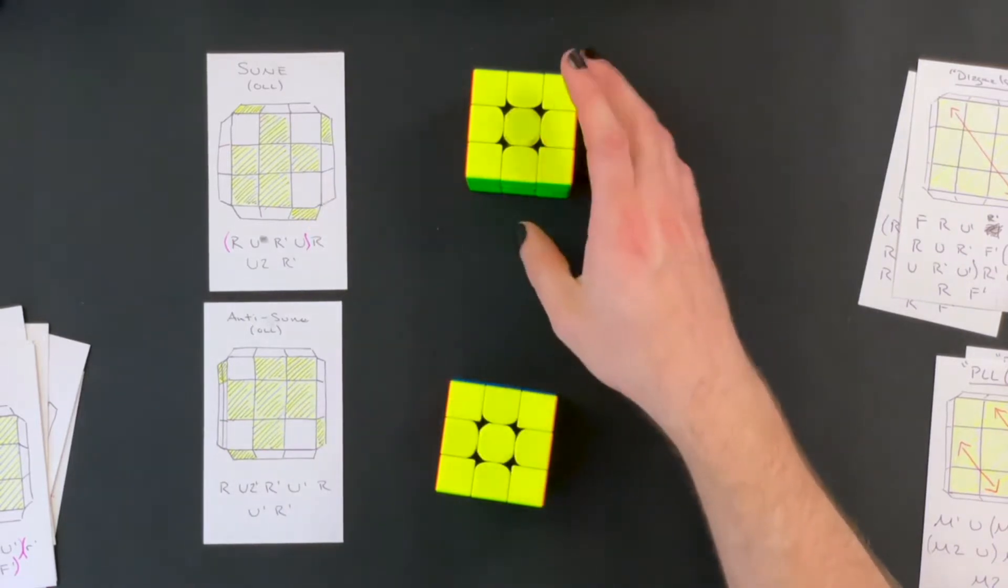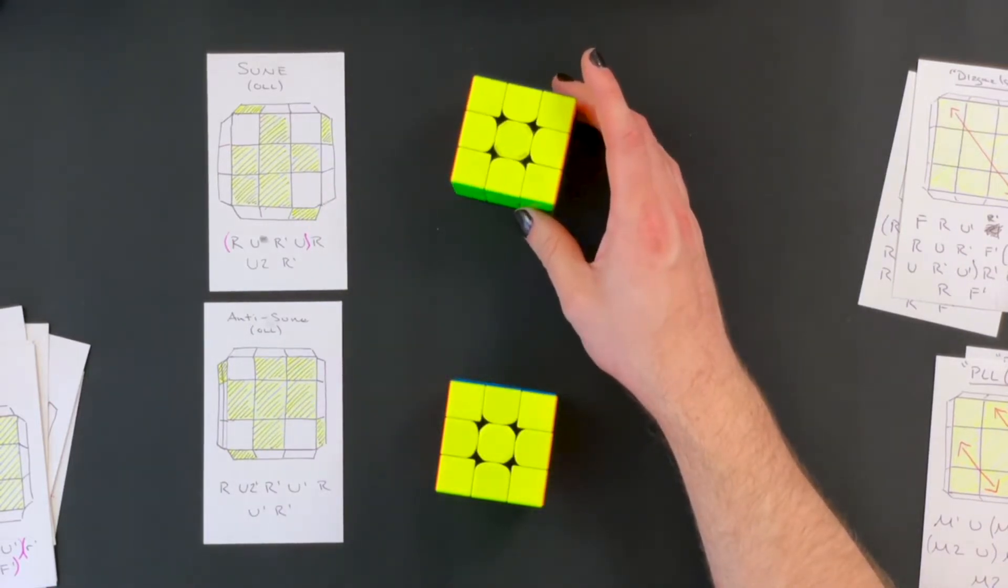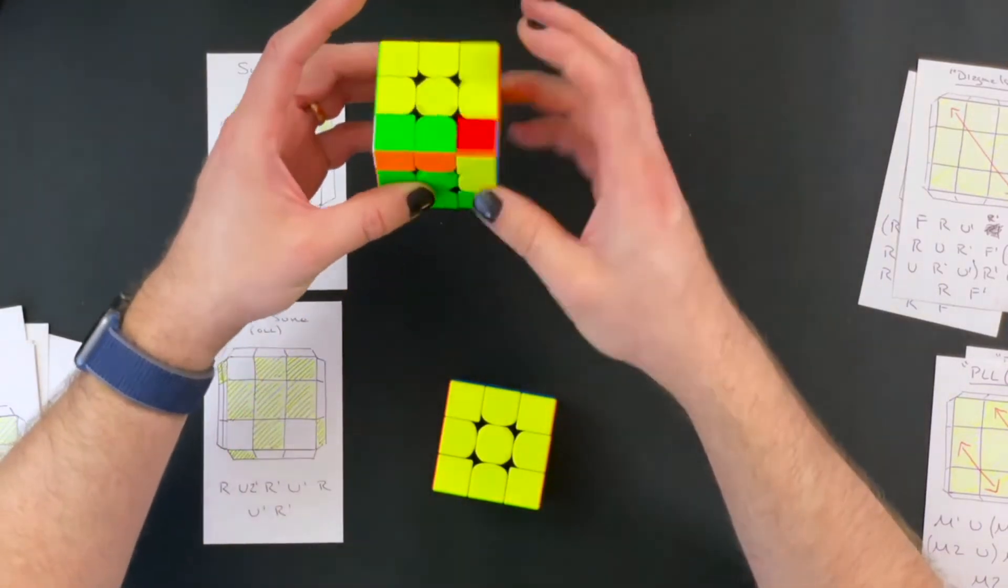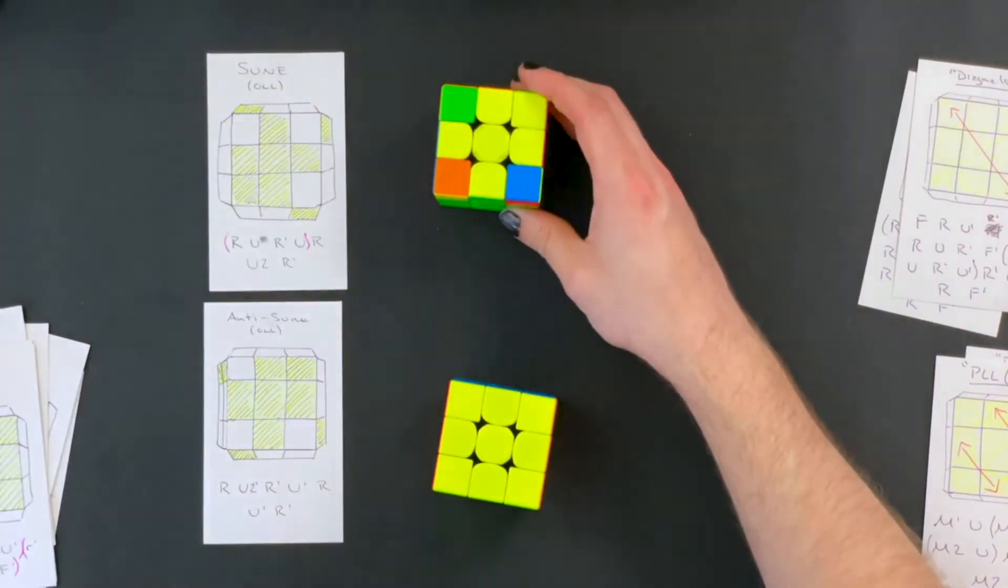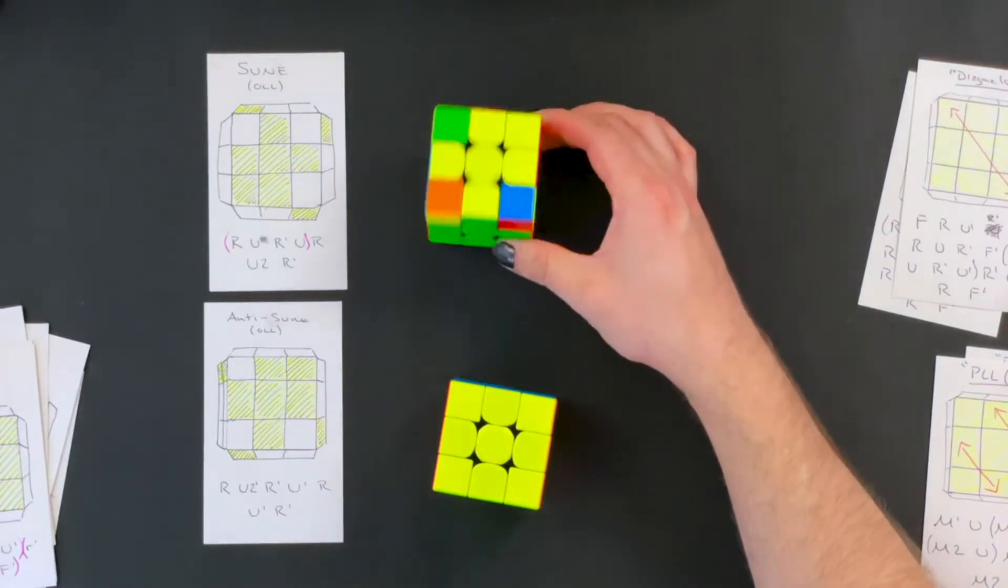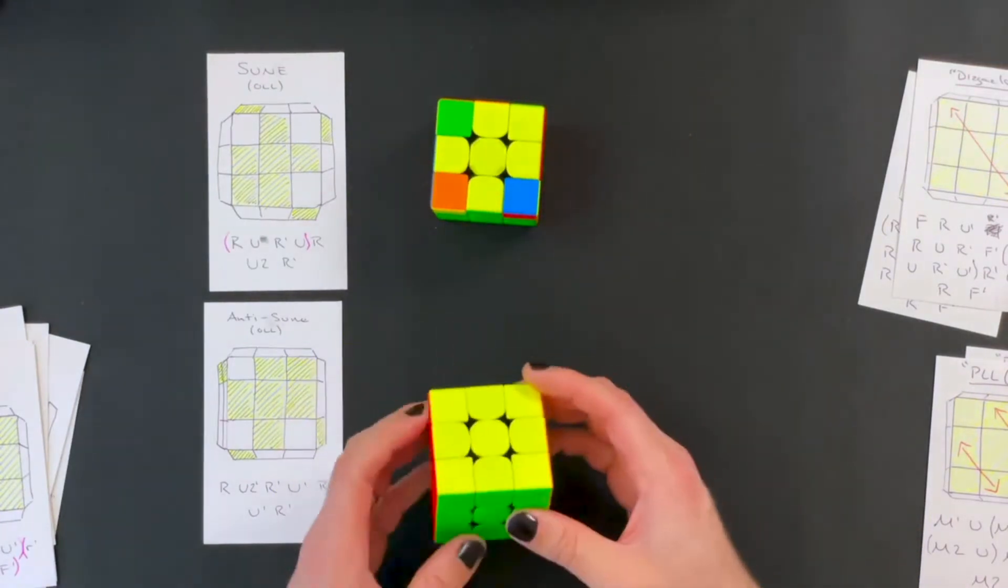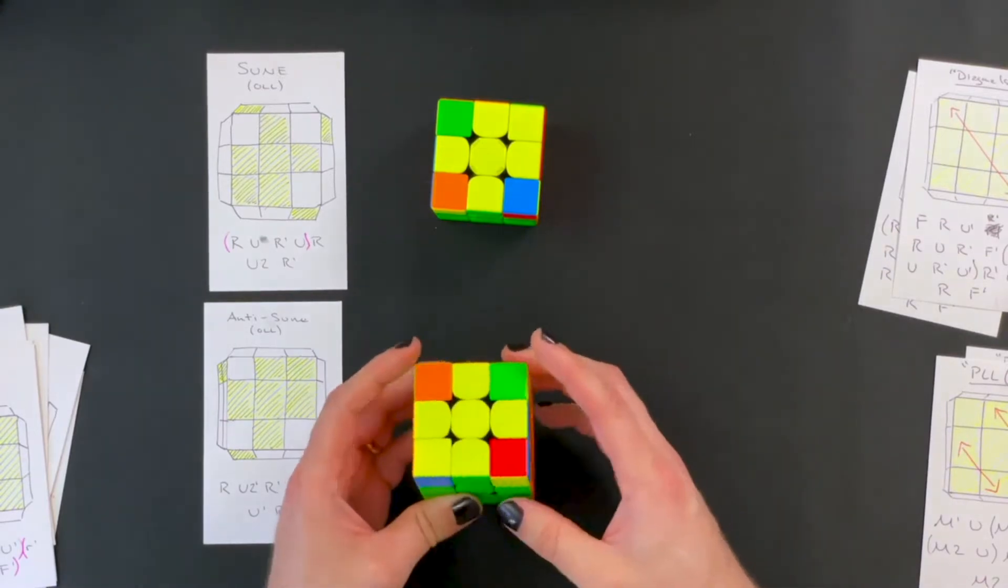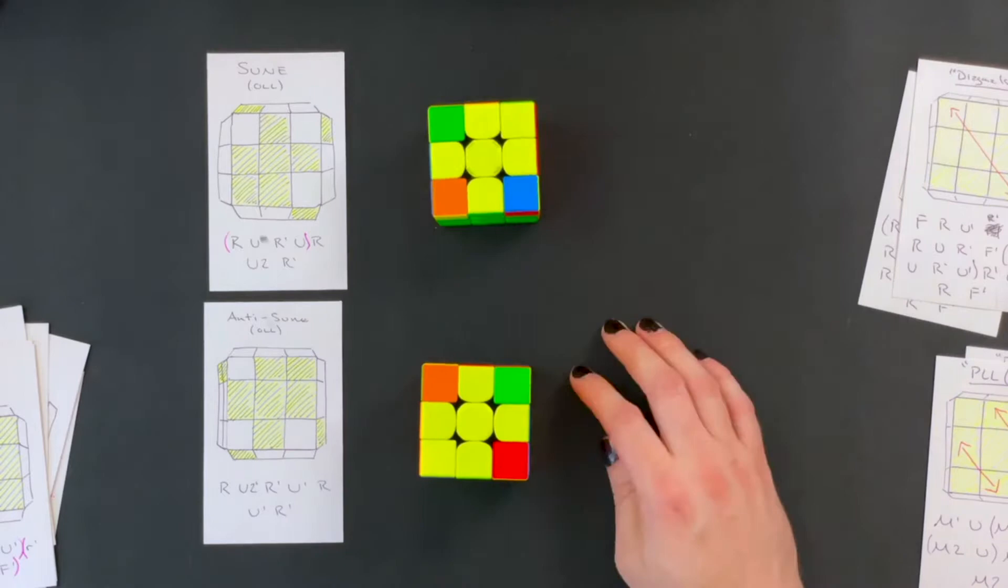So I learned how to do sune which leads to anti-sune and then I learned how to solve the anti-sune which leads back to a solved cube. I have two cubes here so that I can show how that works. So I did the sune algorithm on the top and it led to anti-sune and then I did anti-sune on the bottom and that led to sune.